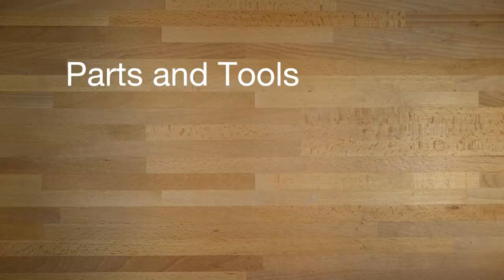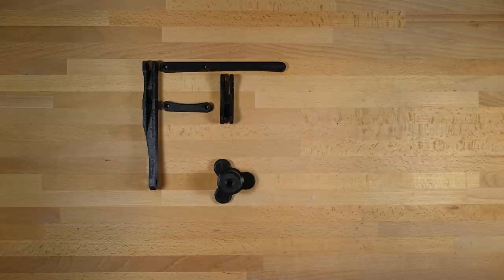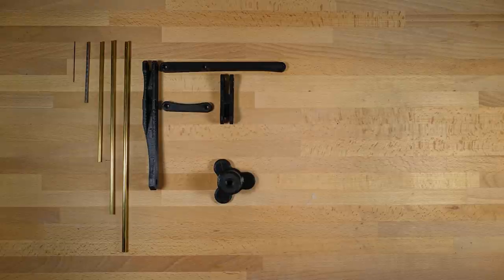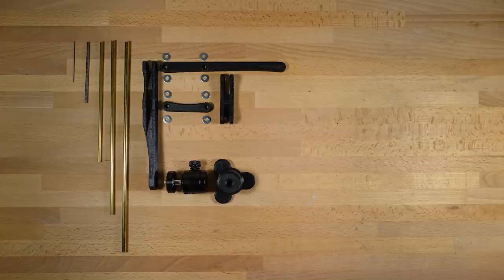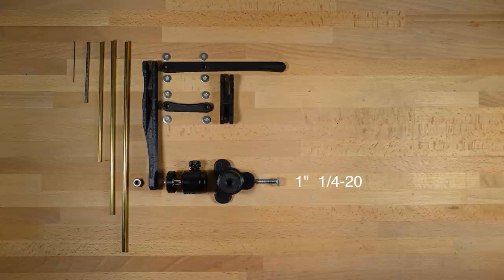Alright, so what do we need to build one of these things? First there are these five 3D printed parts, then there's some tubing and wire, some washers, this ball joint, a bolt and nut, and some stick-on feet.